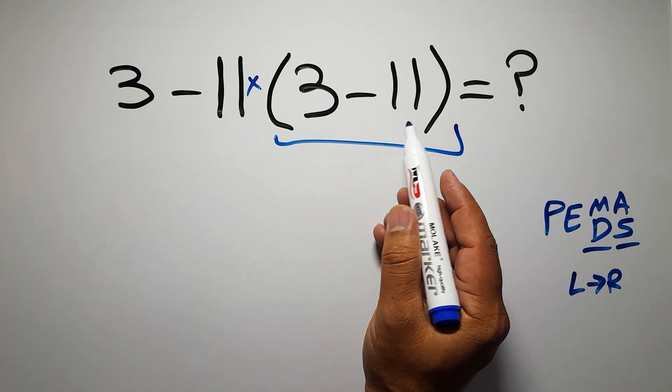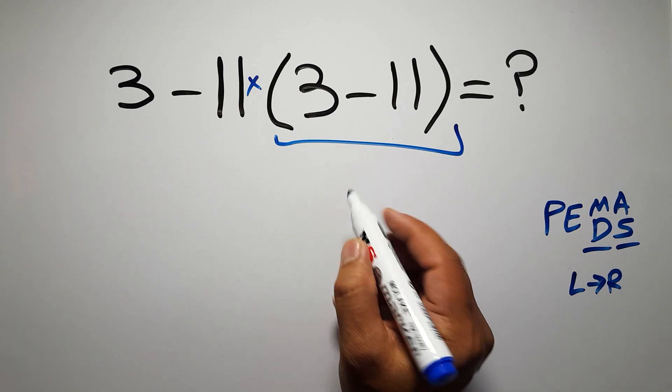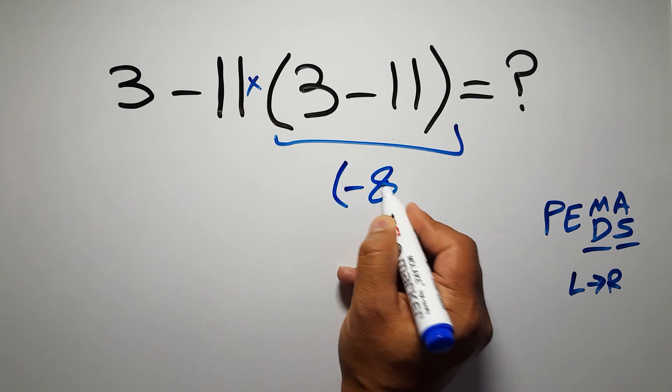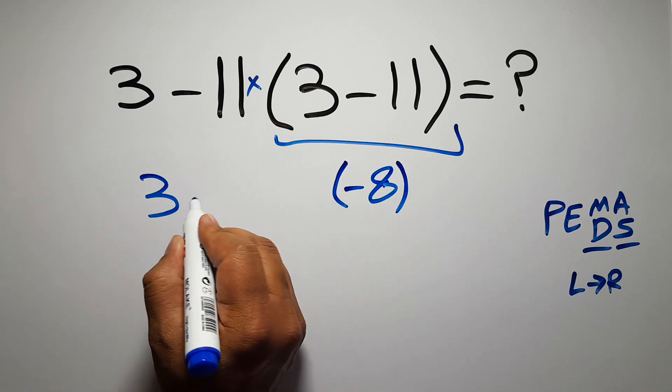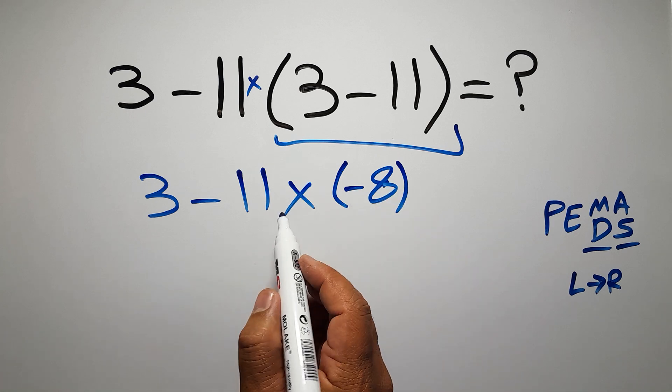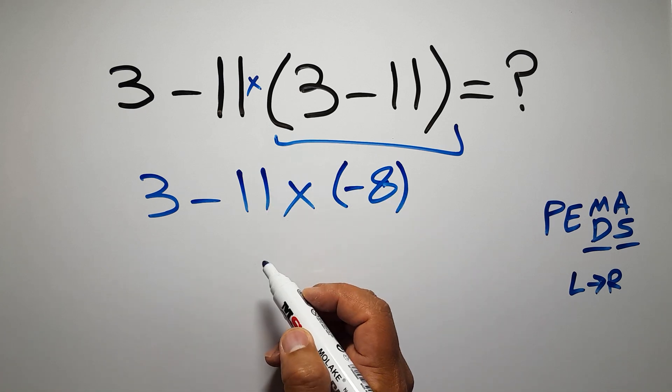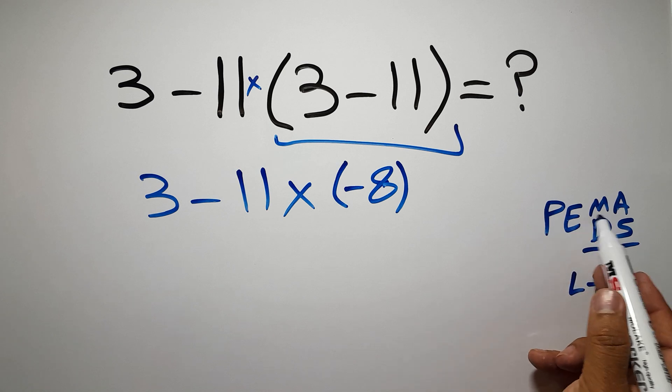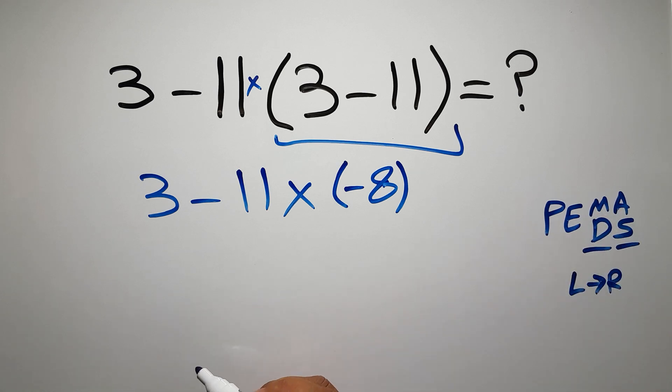So first, this parentheses: 3 minus 11 gives us negative 8, so we have 3 minus 11 times negative 8. Now we have to do this multiplication because in PEMDAS multiplication comes before subtraction.